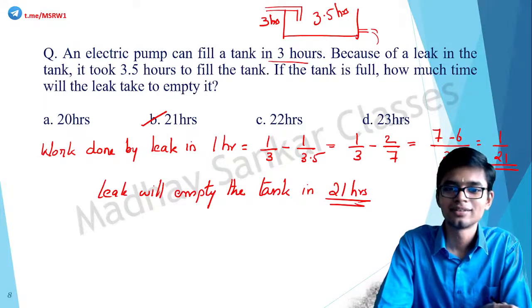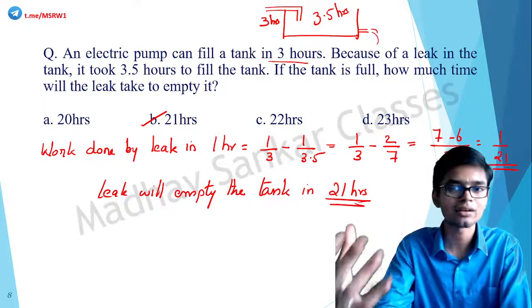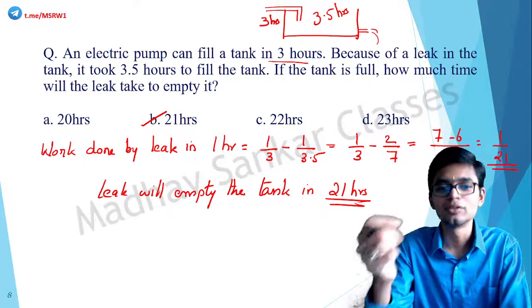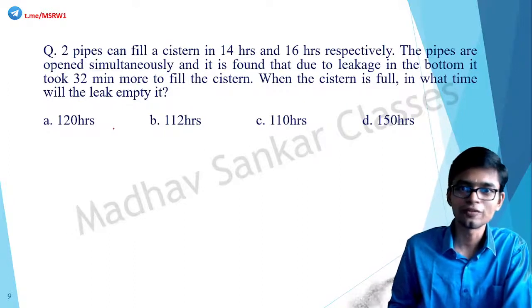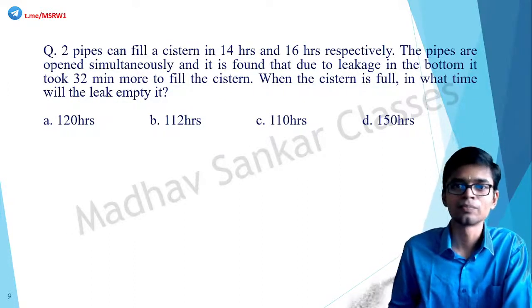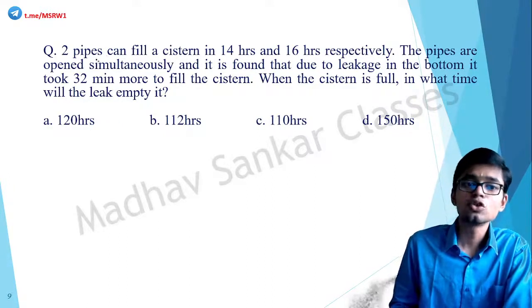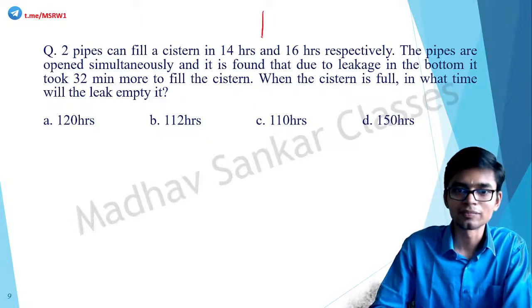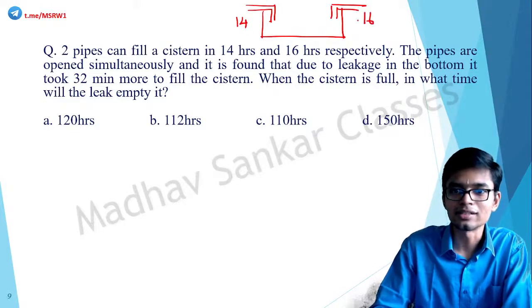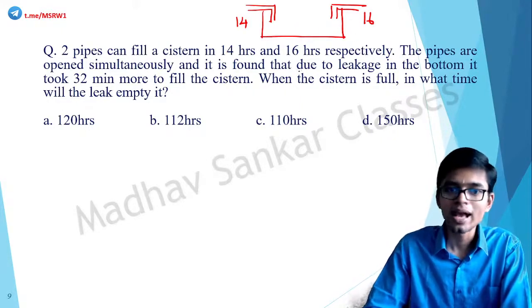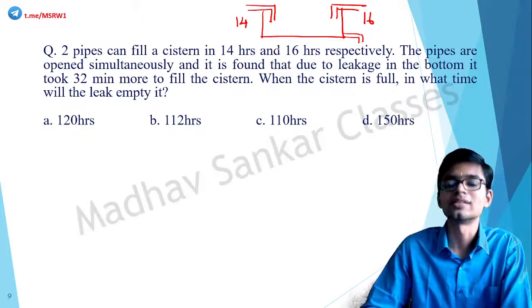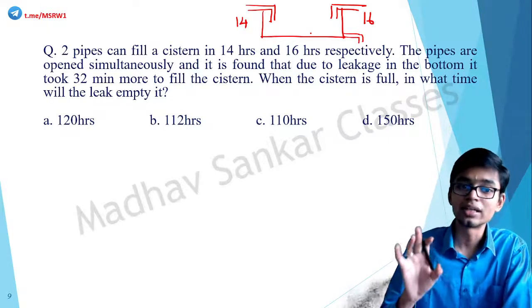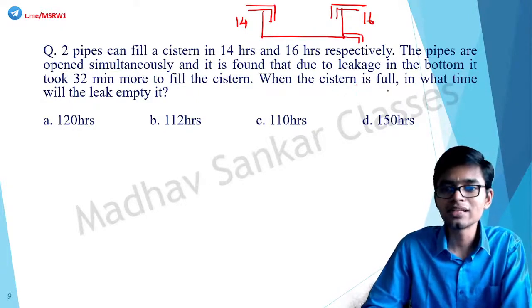Pretty simple — just understand what is going on, put it into a mathematical form, and solve it. Moving on to Question 6: Two pipes can fill a cistern in 14 hours and 16 hours respectively. The pipes are opened simultaneously, and due to leakage at the bottom it took 32 minutes more to fill the cistern. In what time will the leak empty the cistern?